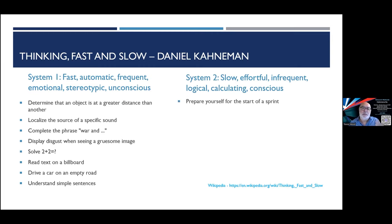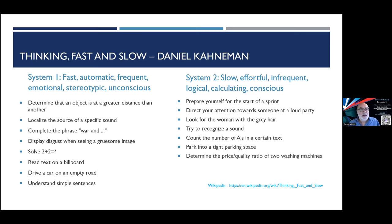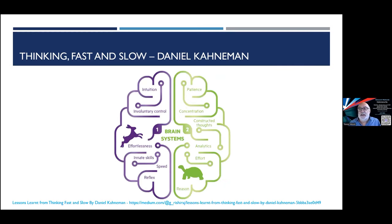System 2 examples include preparing for the start of a sprint race, directing your attention to find a specific person at a loud party, trying to recognize an unfamiliar sound, counting the number of A's in a piece of text, parking in a tight space, comparing price-quality ratios of two washing machines, or determining the validity of a complex logical argument. Essentially: intuition and reflex on one side, patience, concentration, analytics, and reason on the other.